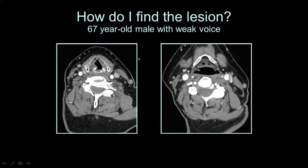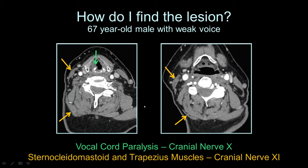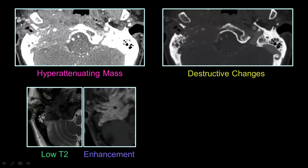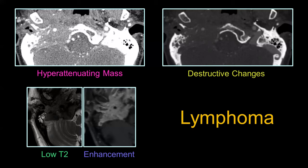Here's a 67-year-old male with a weak voice. Axial CT shows right vocal cord paralysis with posterior medial rotation. You then look for ancillary findings and notice fat loss along the right neck and loss of muscle bulk in the right sternocleidomastoid and trapezius muscles — indicating cranial nerve 11 is also involved. So you have CN10 and CN11 together, which means heading right up to the skull base. There you find a hyperattenuating mass that has destroyed the bone at the right skull base — low T2 signal on MRI with intense enhancement. This was lymphoma involving the skull base causing vocal cord paralysis.